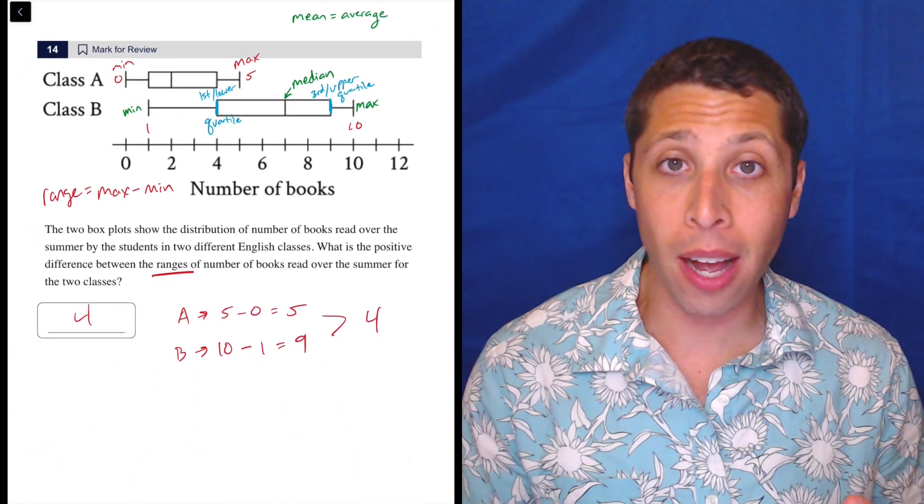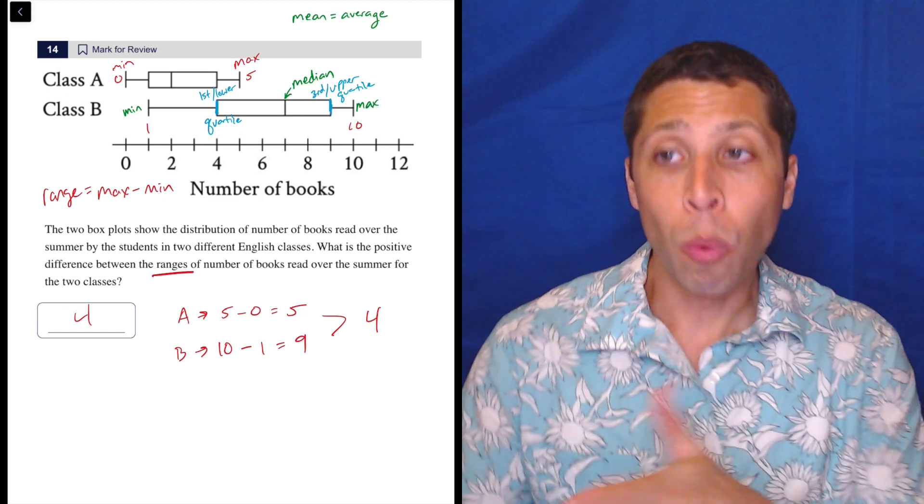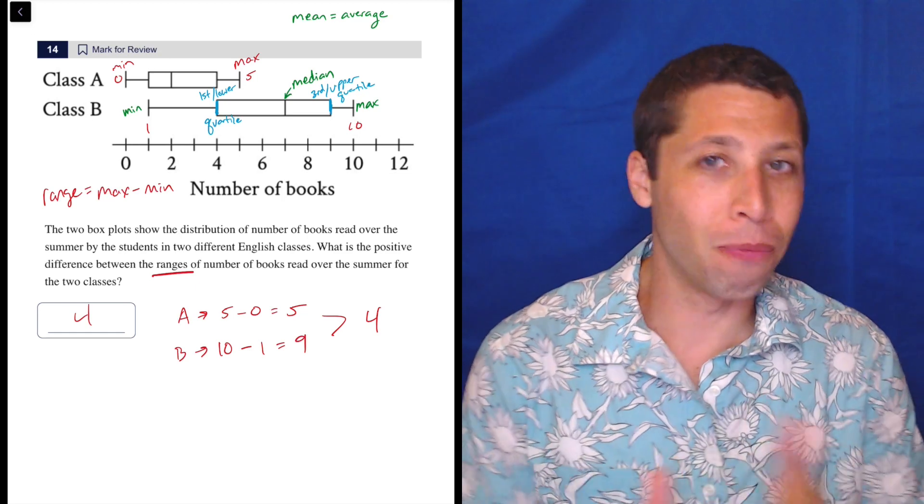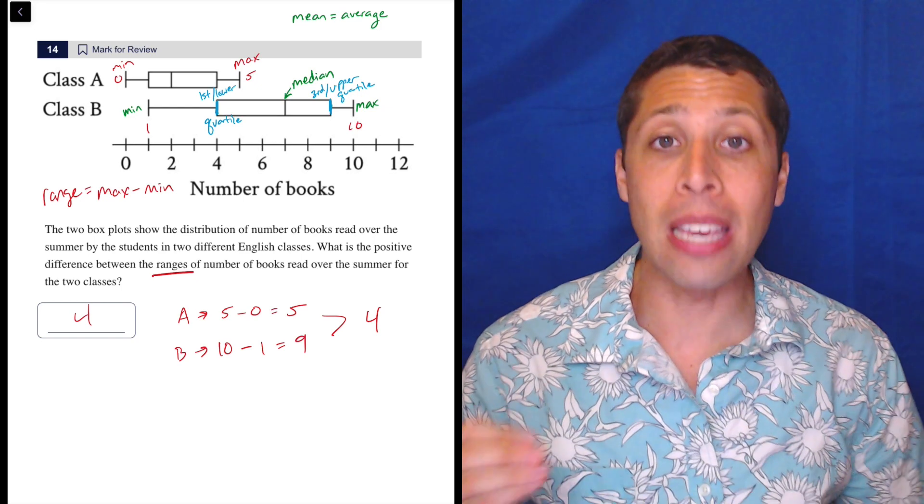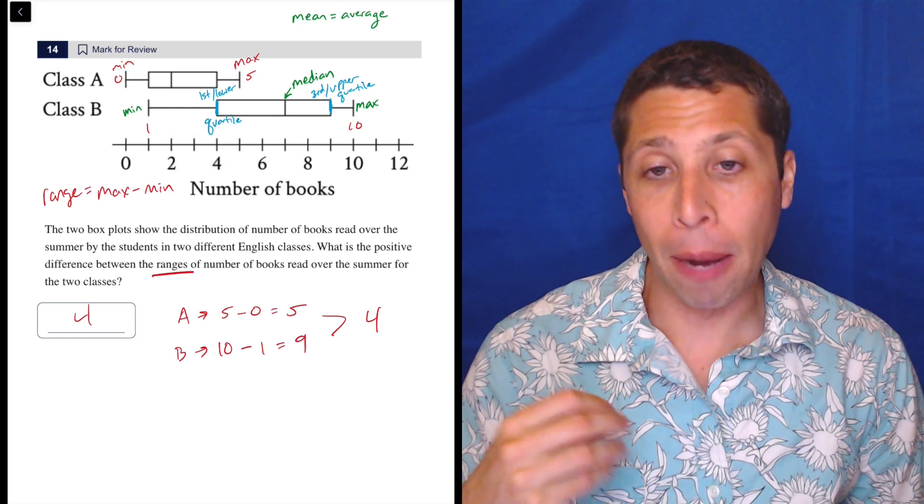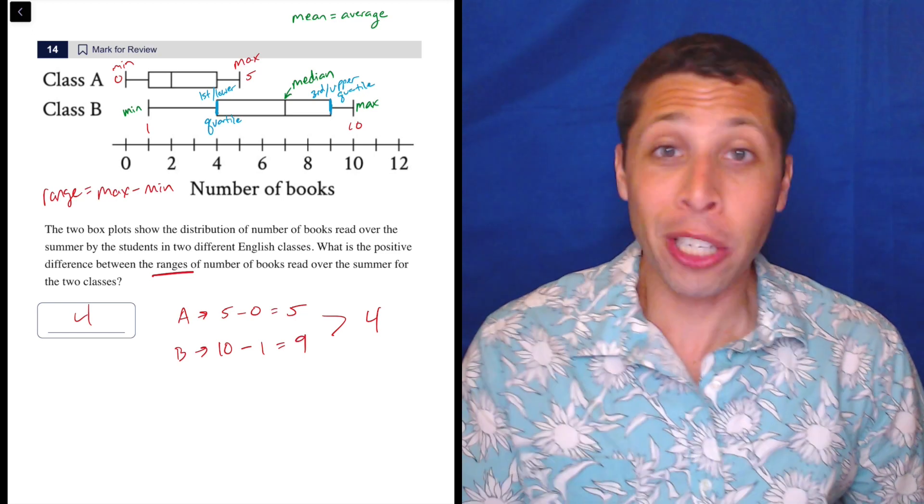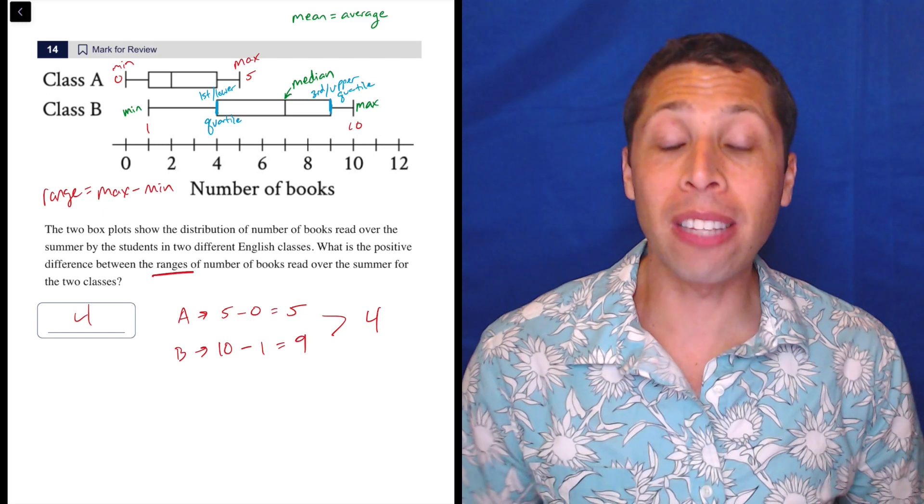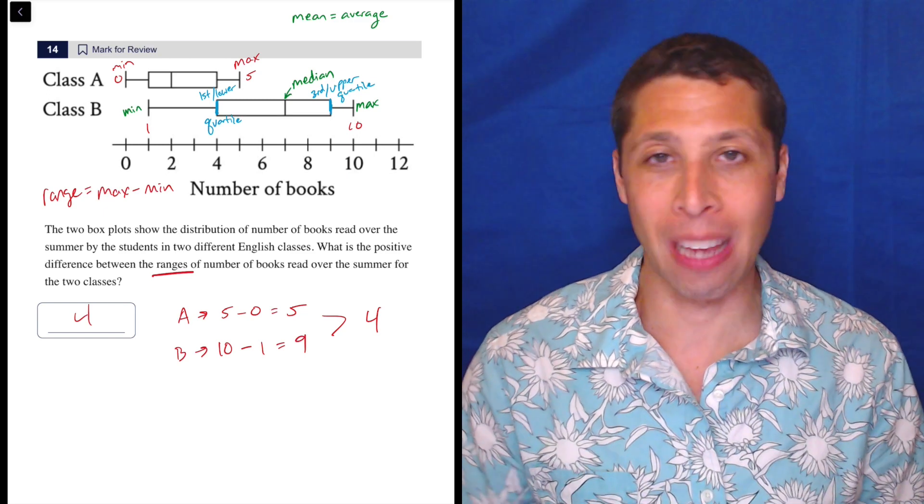But that's pretty much it. So from a box plot, we don't actually know what's going on with the rest of the data set. We can't find the average, like I said, we can't find the mode. We don't know even how many data points are in the set. So it's very limited in what we can do with it. But that's good for us, because then if the SAT asks about it, it's very limited what they can ask. So hopefully this little refresher will get you anything that you need in case box plots come up again on your real SAT.